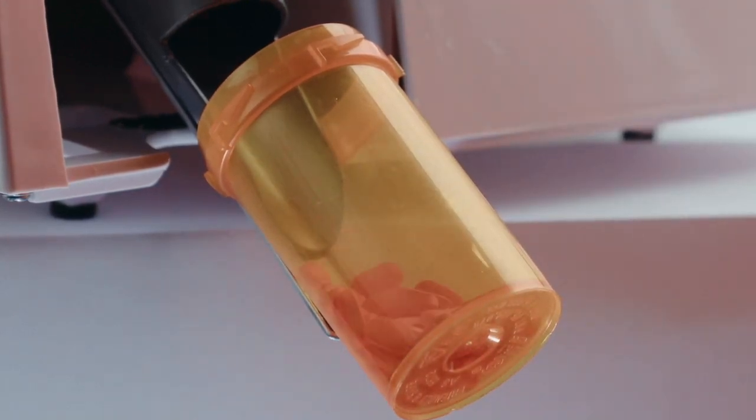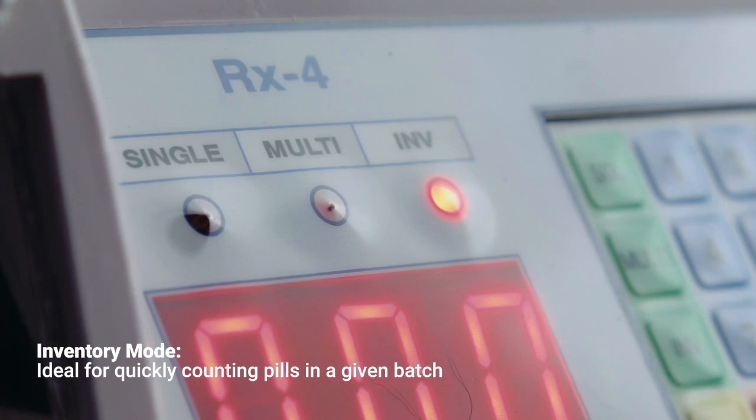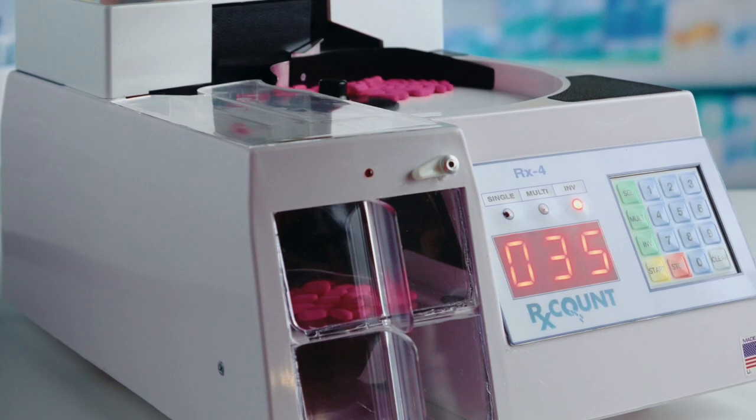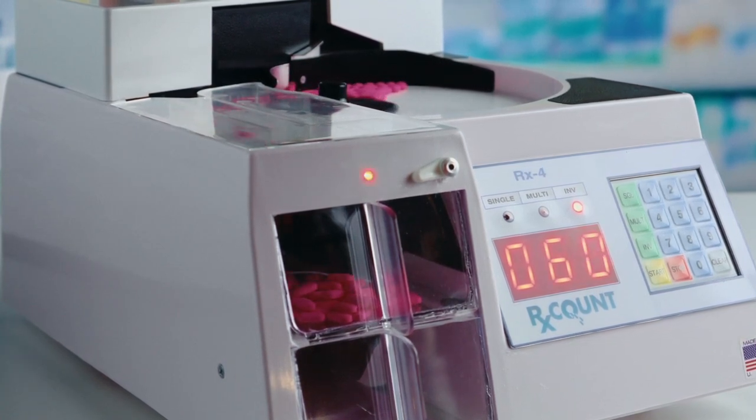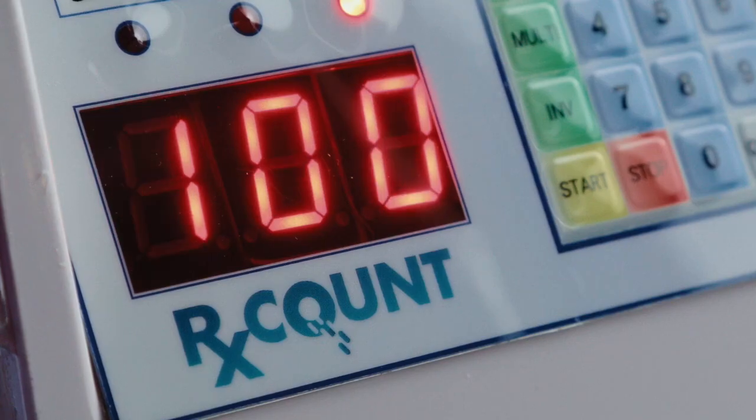The optional foot pedal start button helps make this task hands-free and easy. Inventory mode is for determining the number of pills in a batch. Simply pour the quantity of pills you would like counted directly onto the turntable and the machine will count the entire quantity, making ordinarily tedious inventory counts accurate and fast every time.